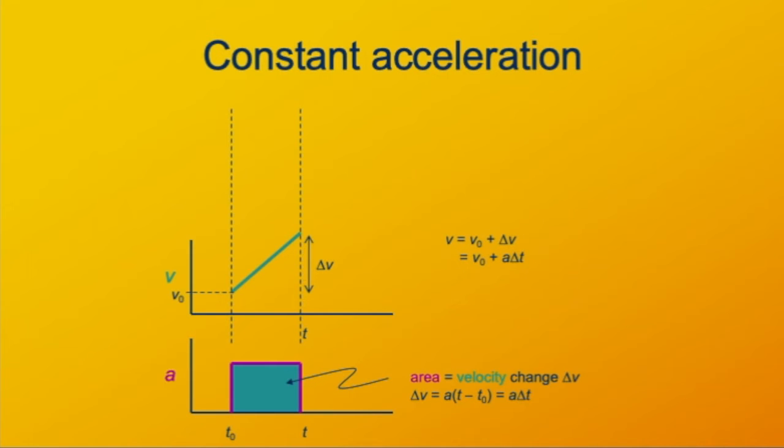The formula for v as a function of time is v₀ plus the area of the rectangle, a Δt. The slope of that line is a, the acceleration.